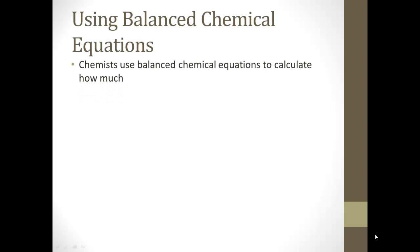So chemists use balanced chemical equations to calculate how much either reactant is needed or how much product is formed. Remember that the reactants are on the left and the products are on the right. So if you have H2 plus O2 makes H2O, and to balance that, since we have two oxygens over here, we need two over here, which now gives us four hydrogens here, so we need a two here. So now we have a balanced equation.